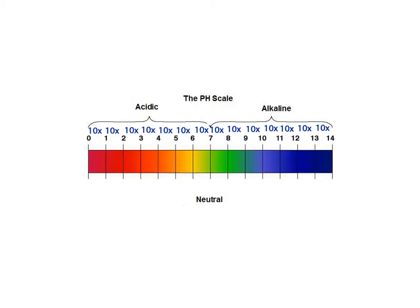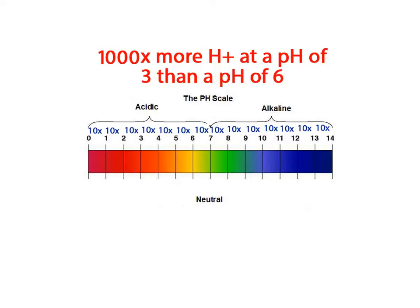For example, as I move from a pH of 6 to a pH of 3, I am moving three spaces. So I put down the number 1 and add three zeros. I now know that there are 1000 times more hydrogen ions at a pH of 3 than there is at a pH of 6.